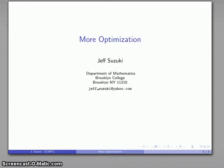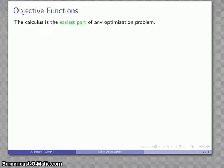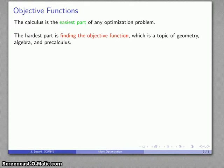All right, let's take a look at another optimization problem. Generally speaking, the calculus is actually the easiest part of any optimization problem. The really difficult part is finding the objective function, which is a topic from geometry, algebra, and pre-calculus.